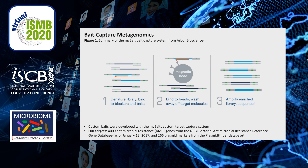Bait capture is a method to enrich sequences of interest from a metagenomic sequencing library before sequencing. We ordered baits from Harvard Bioscience to target 4009 AMR genes from the NCBI AMR Gene Database and 266 plasmid markers from the Plasmid Finder Database.